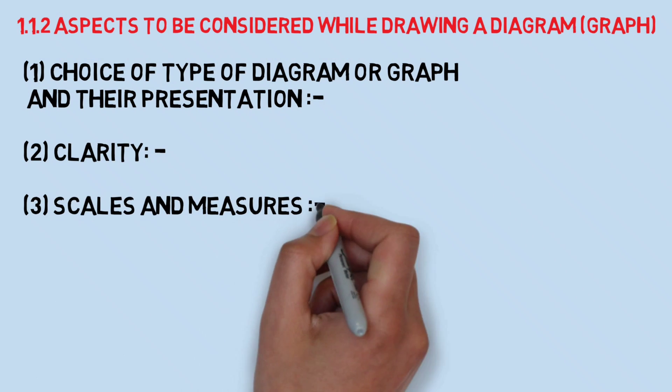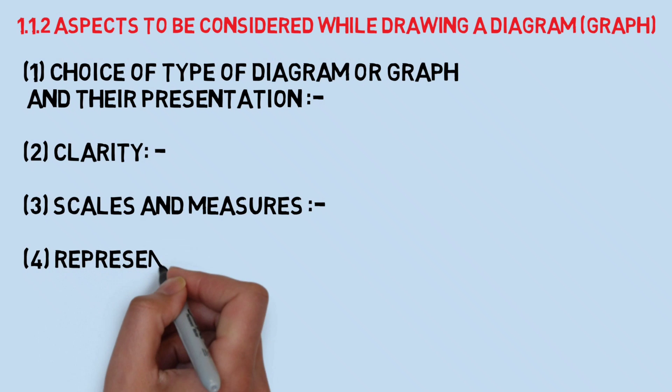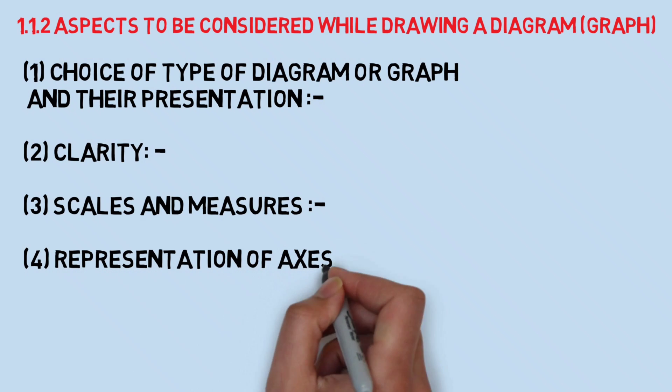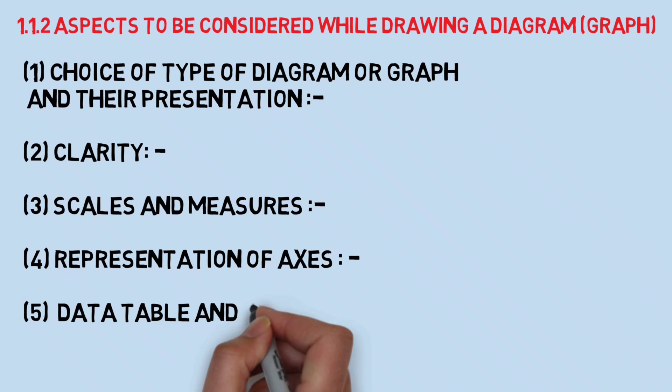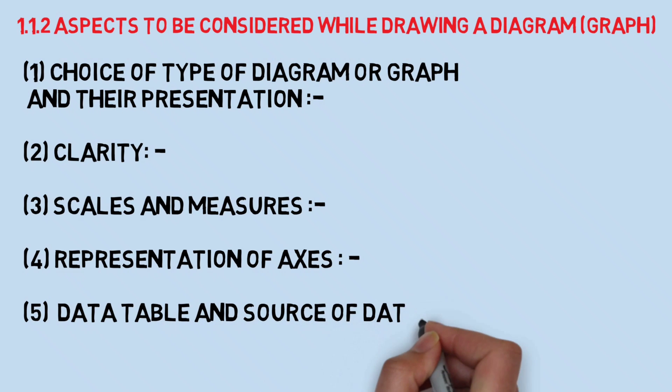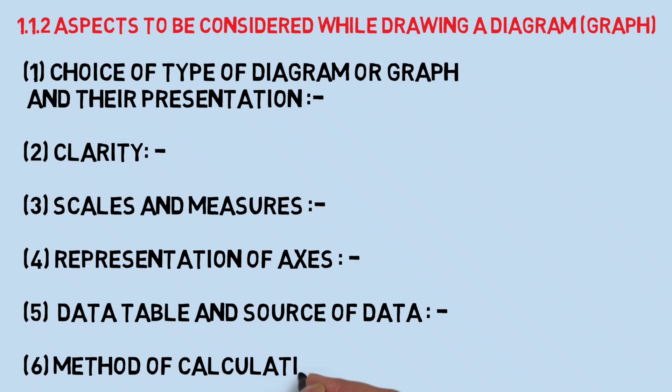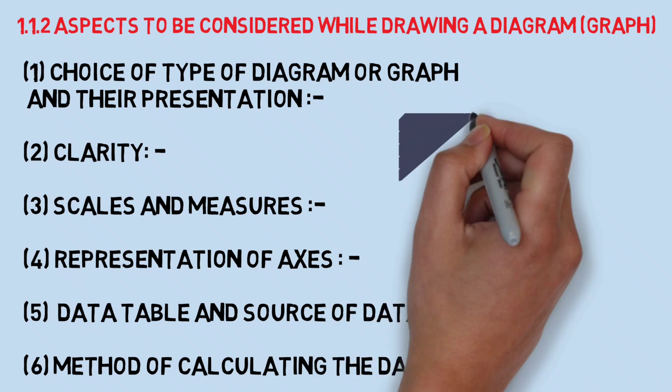Number four, both the axes like X axis and Y axis must be represented clearly. Number five, we must mention the source of data to make it more authentic, that is correct. Number six, the statistical calculations can be decided as per diagrams or graphs.